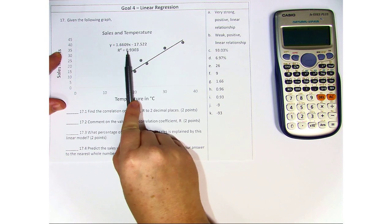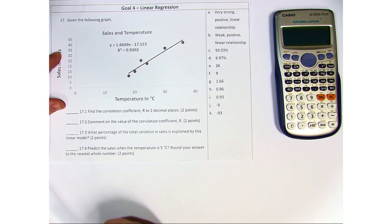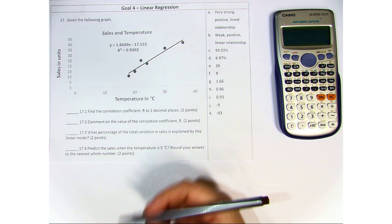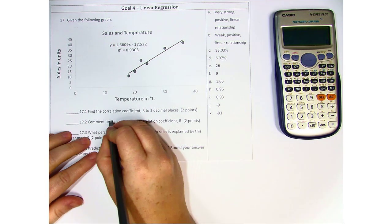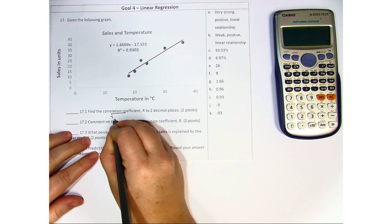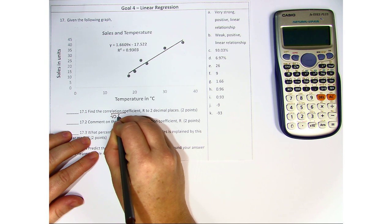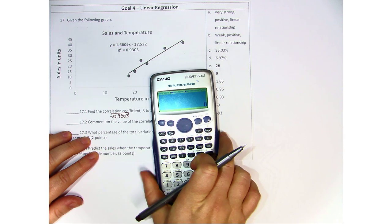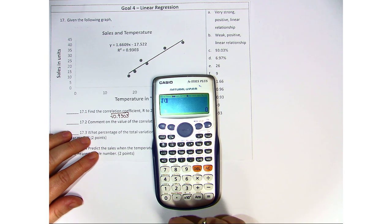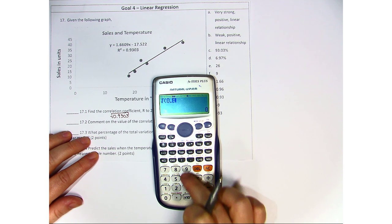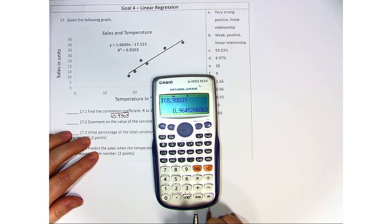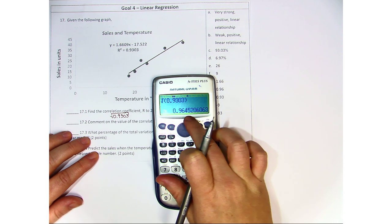Now we have R squared here at 0.93. In order to make an R squared back into an R, we have to undo the square. Now the way that we do this in math is by taking the square root. So I'm going to do the square root of 0.9303. So let's go ahead and do that with our calculator. Square root, 0.9303, close bracket.